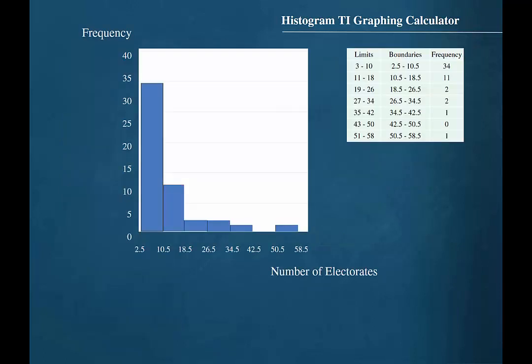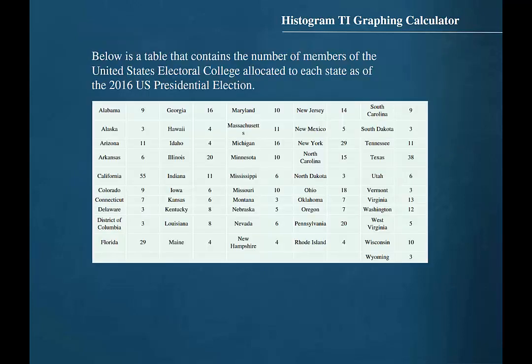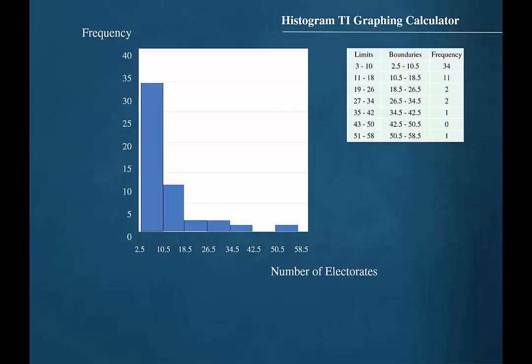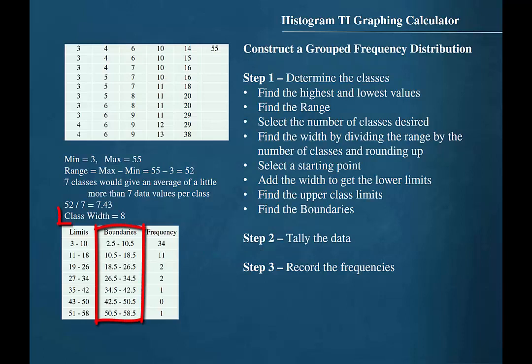We can use the TI graphing calculator to construct this histogram for us. In order to do this, we will need the data set, and in order to ensure that the histogram generated by the TI graphing calculator matches the one that we constructed by hand, we will need the class boundaries and the class width that we found in the process of constructing the grouped frequency distribution.